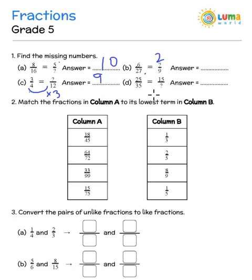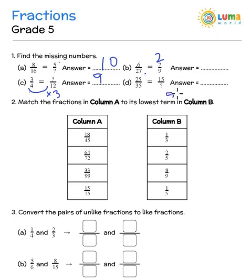The next one: 25 divided by 35 is equal to 15 divided by what? So we know that 25 multiplied by that number should be equal to 35 multiplied by 15. 35 multiplied by 15 gives you 525. So 25 multiplied by what would give you 525? The answer would be 21.